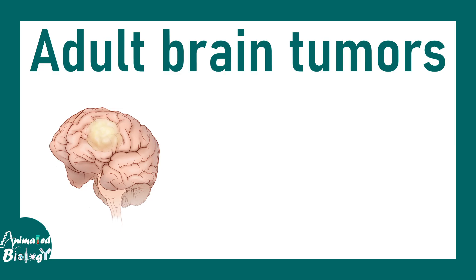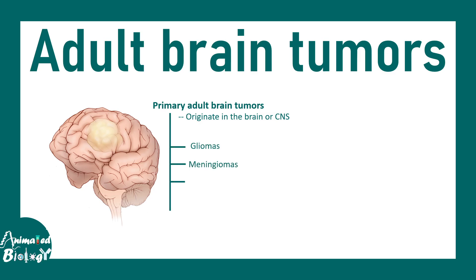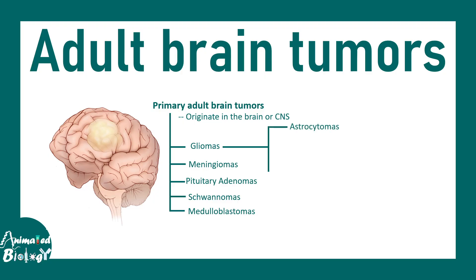Talking about adult brain tumors and their classification: these tumors are primary and originate in the CNS. There are gliomas, meningiomas, pituitary adenomas, schwannomas, and medulloblastomas. Among them, gliomas can be subdivided into astrocytomas — of which glioblastoma is the most aggressive type — as well as oligodendrogliomas and ependymomas.